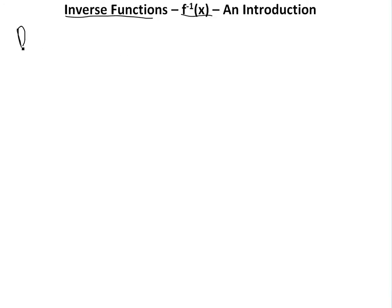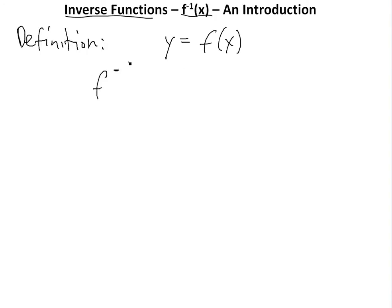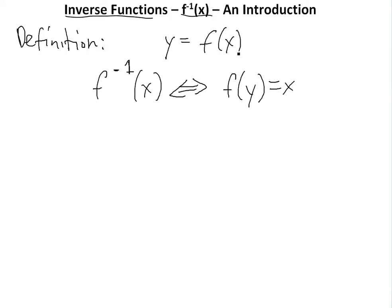I'll start with a definition. So basically if you have a function y equals f of x, then the inverse, which is written as f to the power of negative 1 of x, correlates to f of y equals x. So basically instead of arranging the equation so that y is a function of x, x is a function of y. So all we're doing is switching x and y.